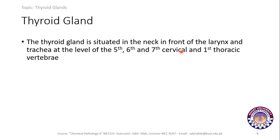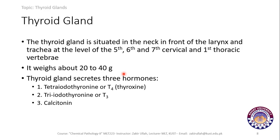The thyroid gland is located in the neck, in front of the larynx and trachea, at the level of the 5th, 6th, 7th cervical and 1st thoracic vertebrae. Its weight is about 20 to 40 grams. The thyroid gland secretes three types of hormones: tetraiodothyronine (T4), also known as thyroxine; triiodothyronine (T3); and calcitonin.